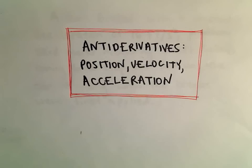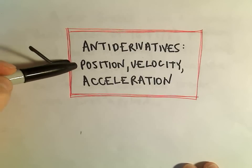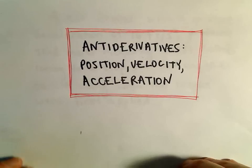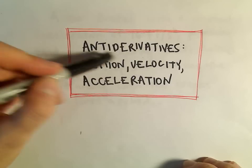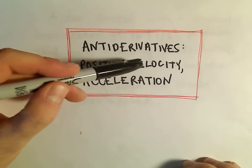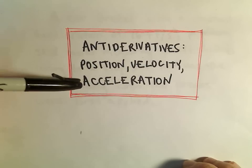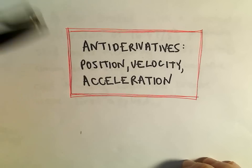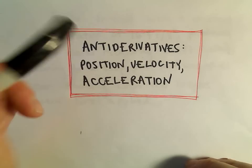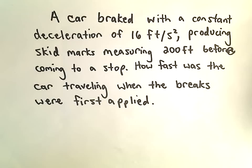In this video I just want to do a little word problem related to anti-derivatives, and we're going to talk about position, velocity, and acceleration. If your original function is position, the derivative of position is velocity, and the derivative of velocity tells you about acceleration. So likewise, if you know about acceleration, we can calculate anti-derivatives to get back to velocity and then our position function. That'll be the trick that we use here.